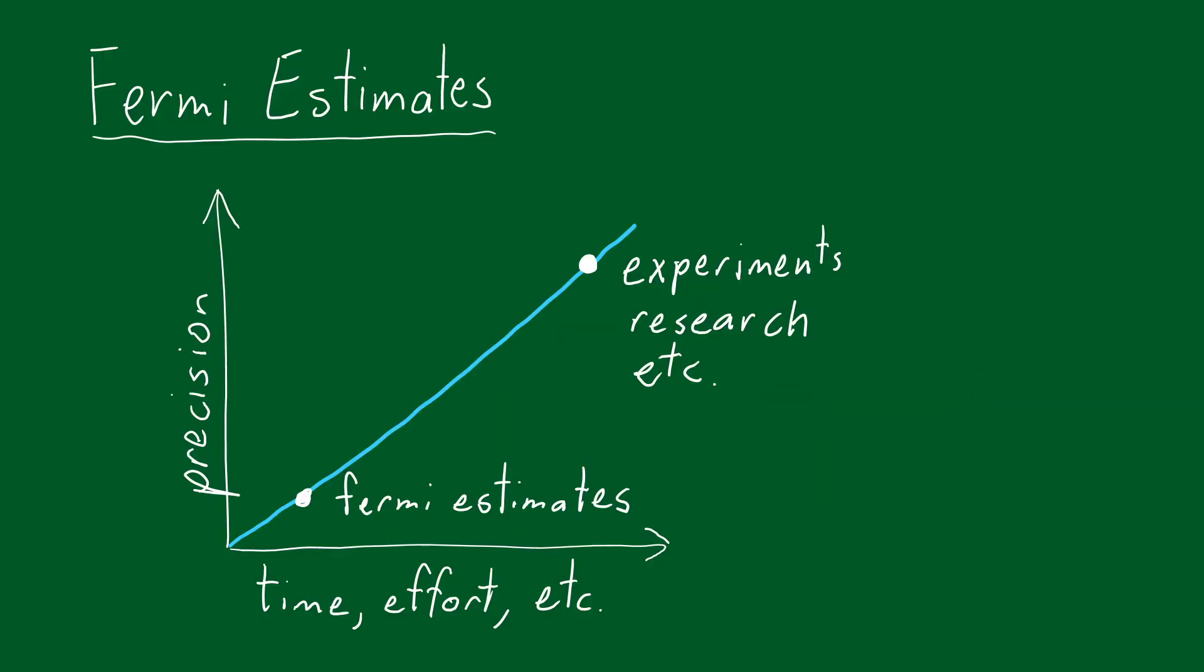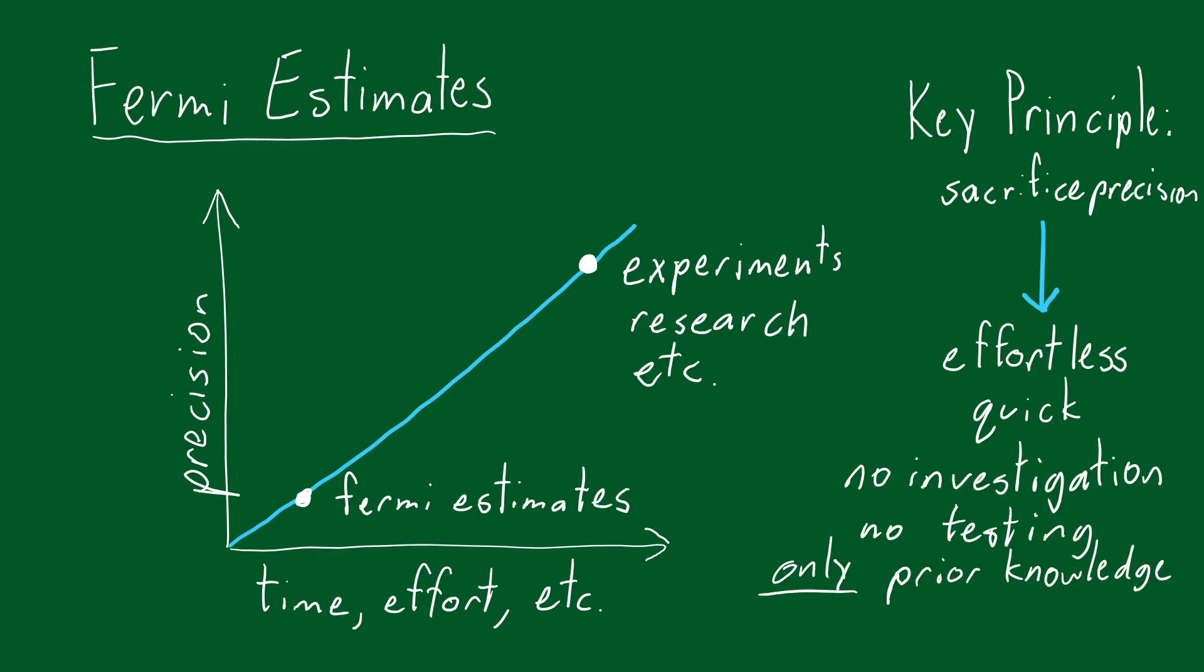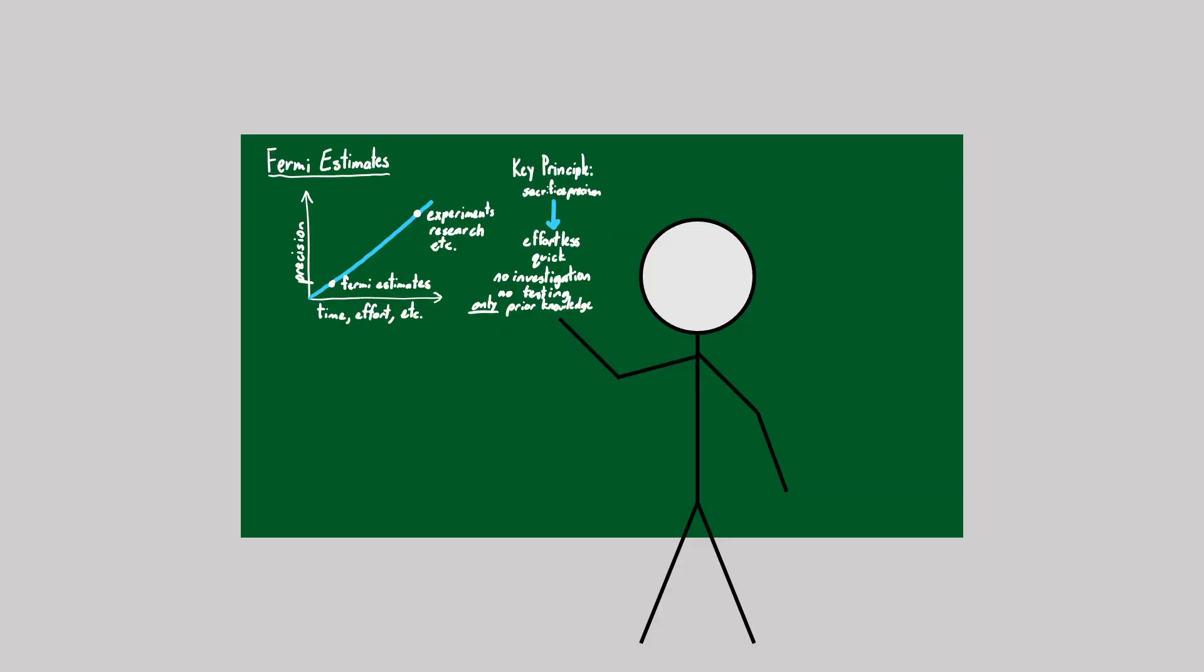Fermi estimates flip this idea on its head. We can sacrifice the precision of our answer significantly, getting an effortless and quick answer in return. That sacrifice also allows abandoning the need for investigation and testing, letting prior knowledge carry the weight.